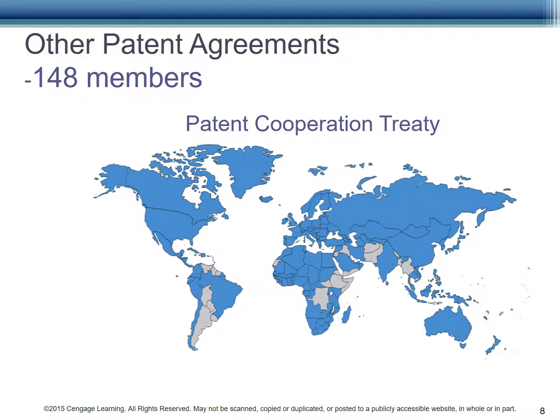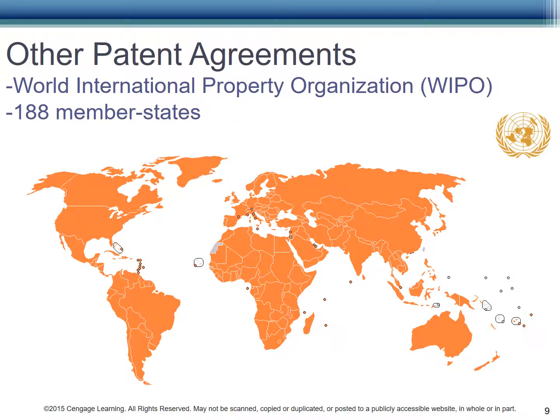The Patent Cooperation Treaty has 148 members. The World Intellectual Property Organization (WIPO) boasts 188 member states, all in an effort to improve patent protections.